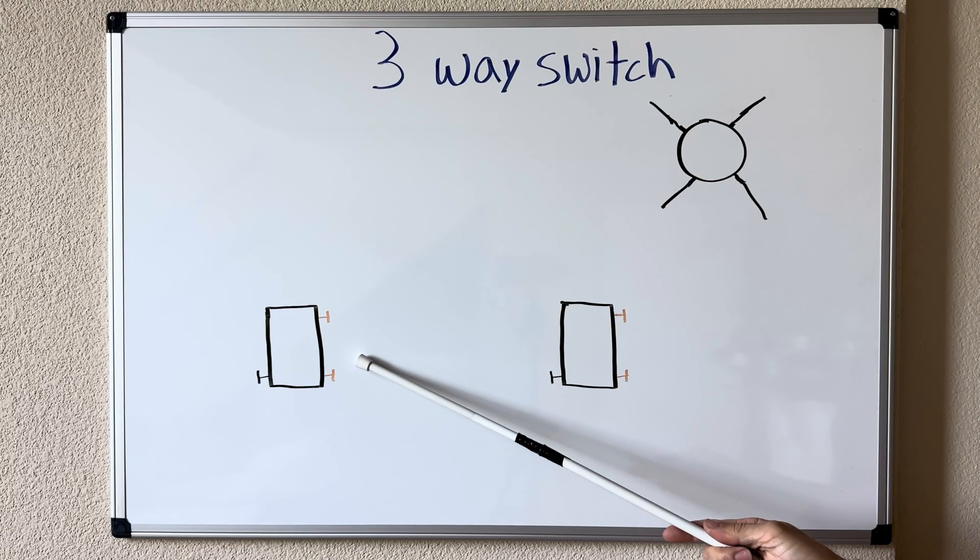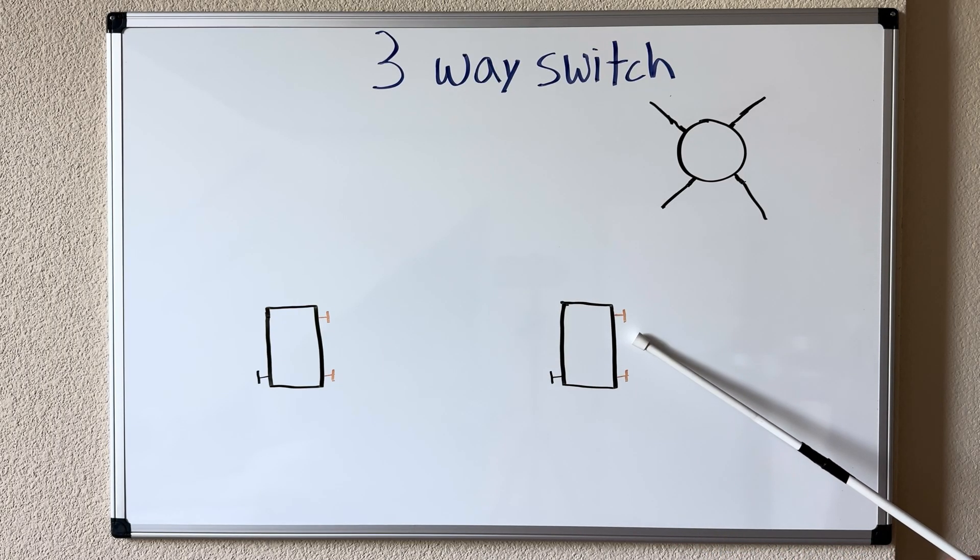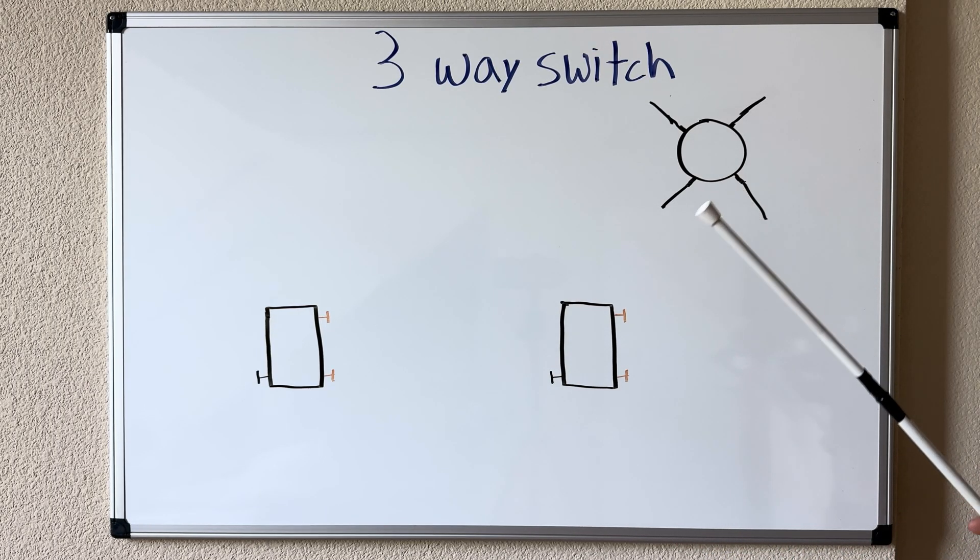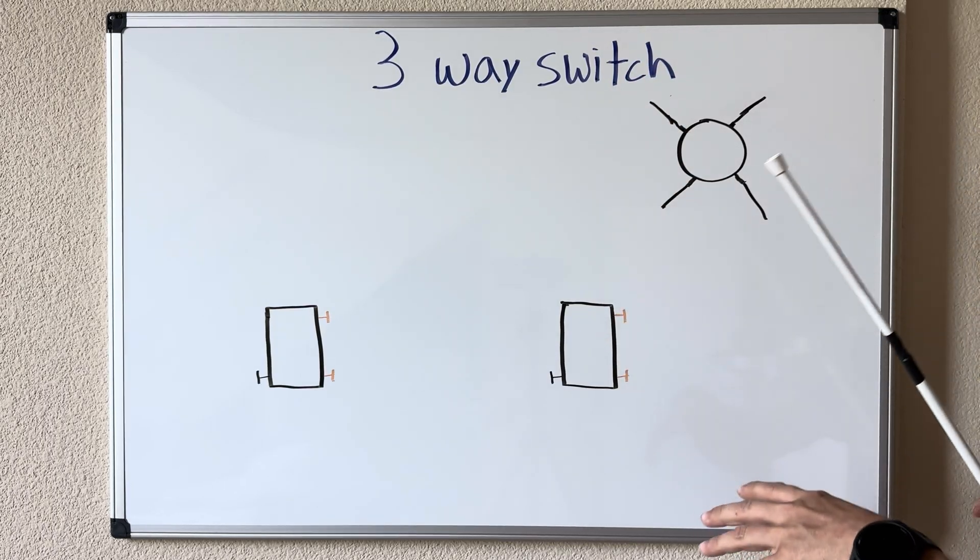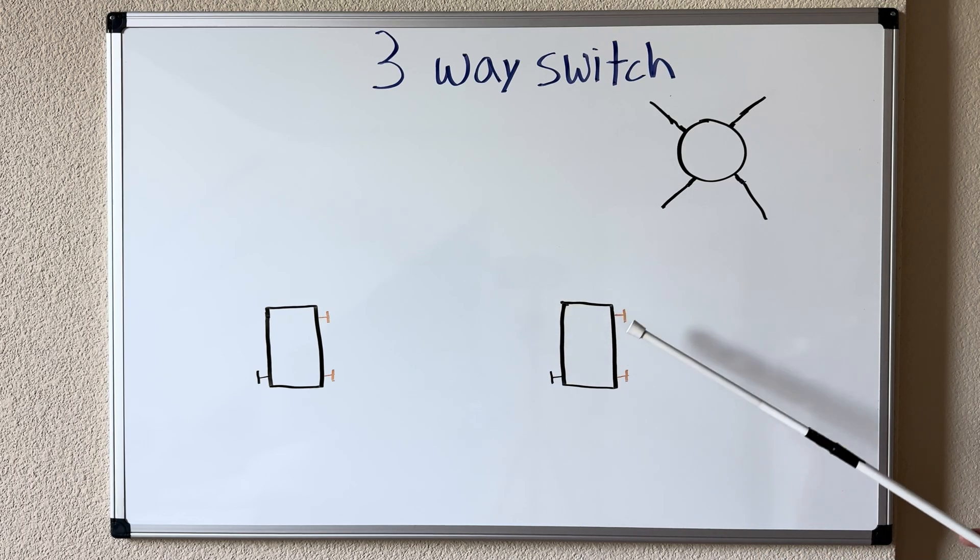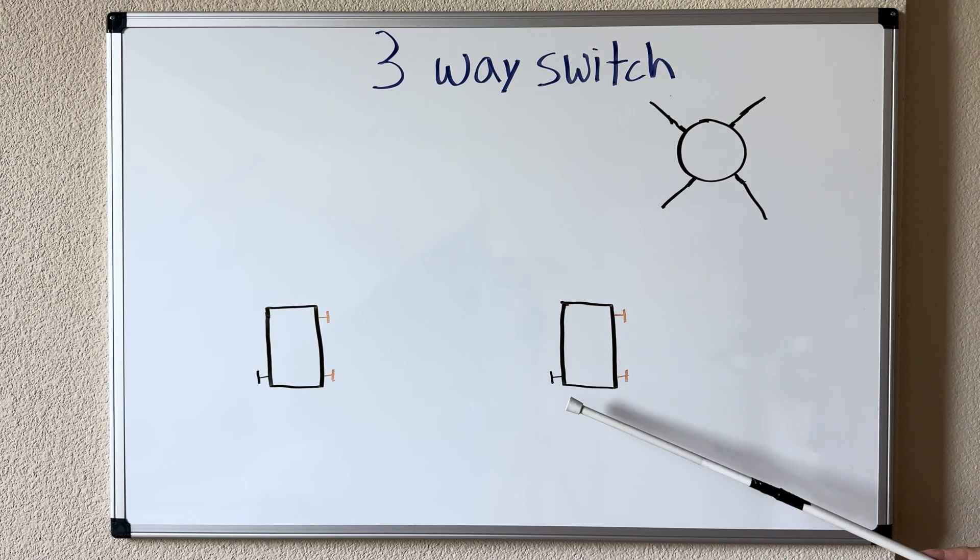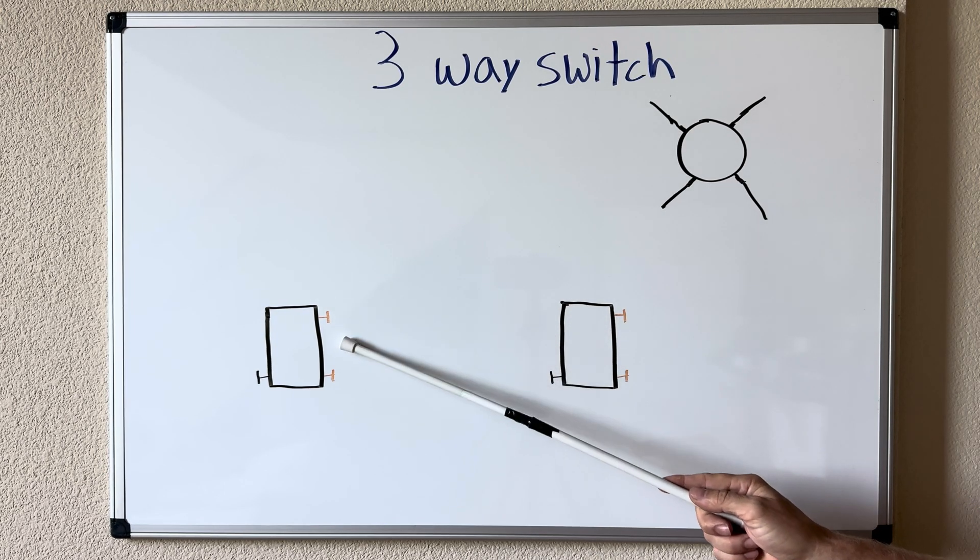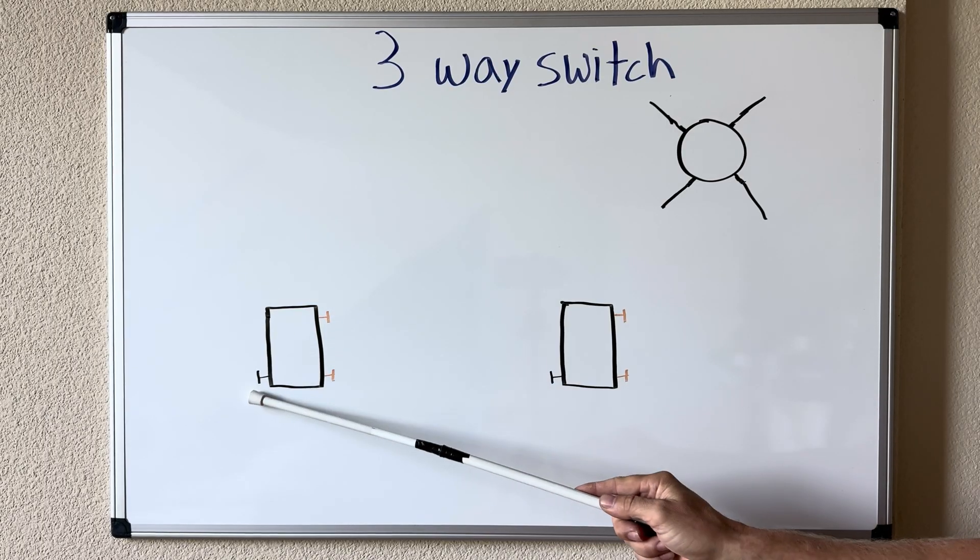So with this example we're going to have a three-way switch here, another three-way switch here, and one light. Obviously you could have more lights on the circuit but for the example we're just going to show one light. And if you notice on each one of these switches we have two brass screws and a black common screw. Same as the other one, two brass screws, black common screw.